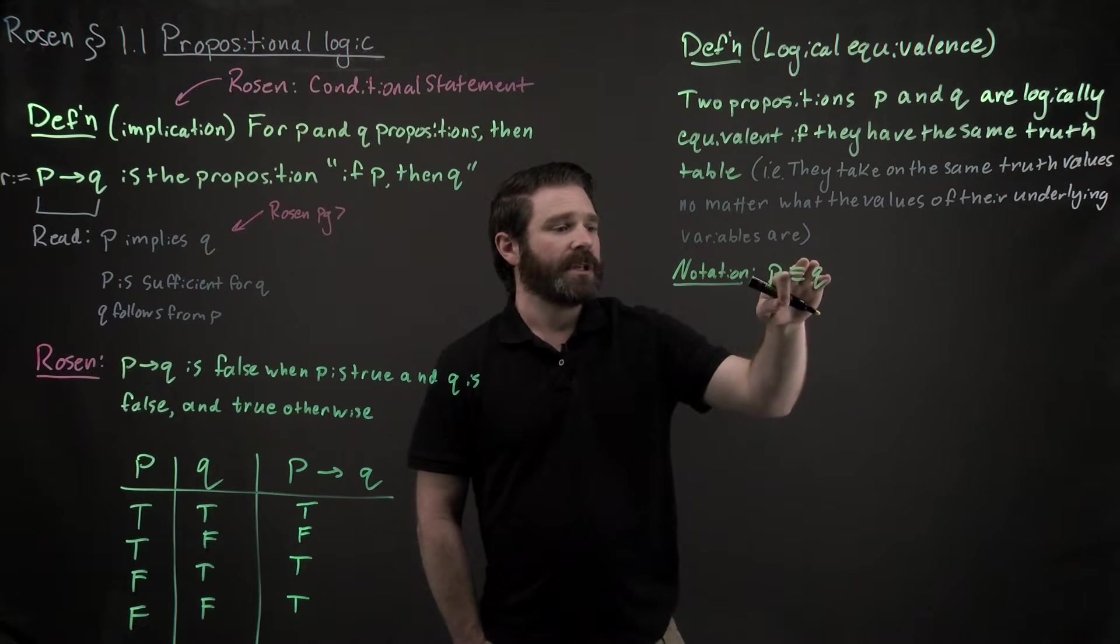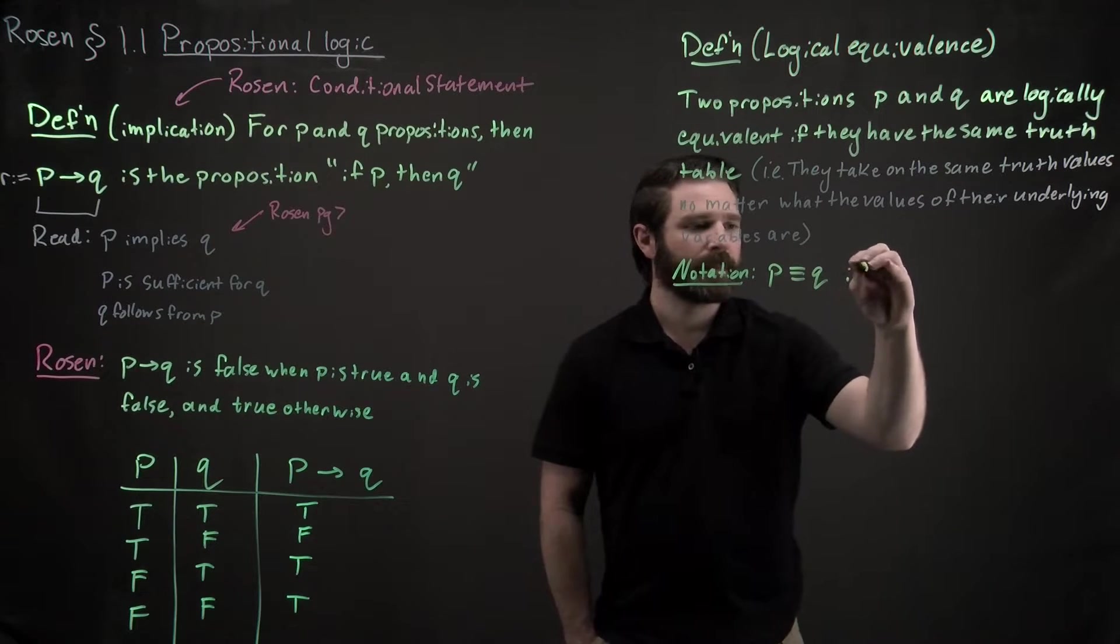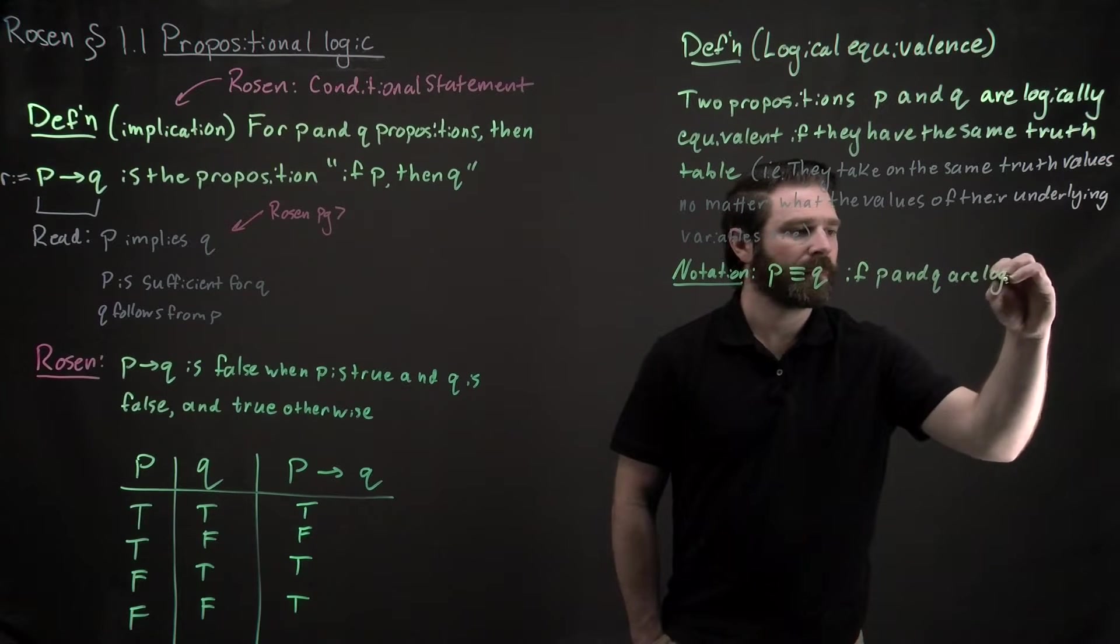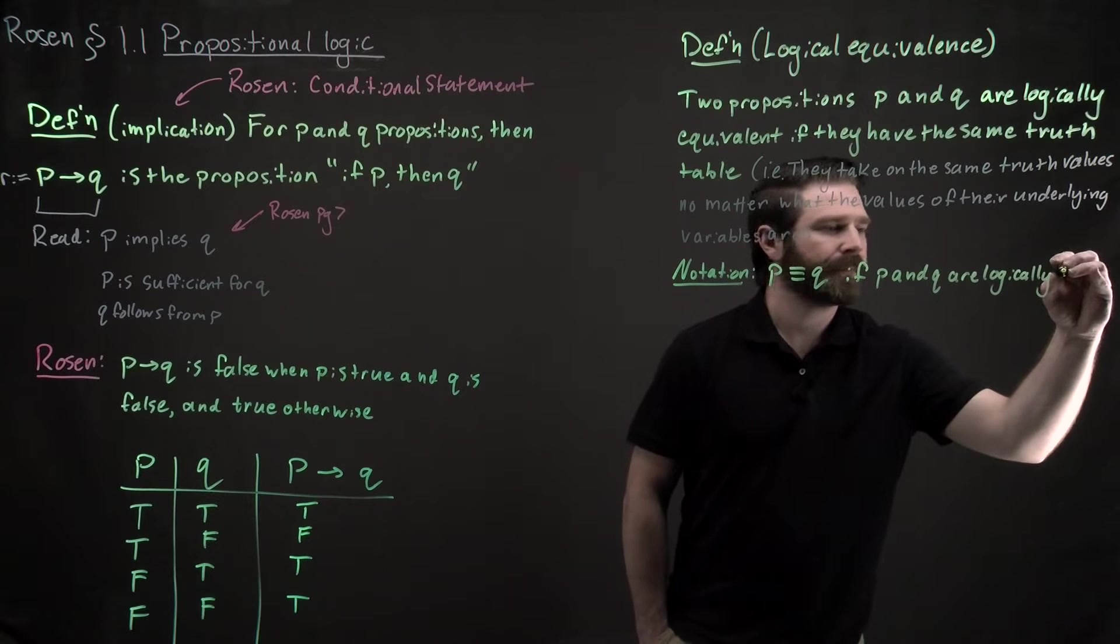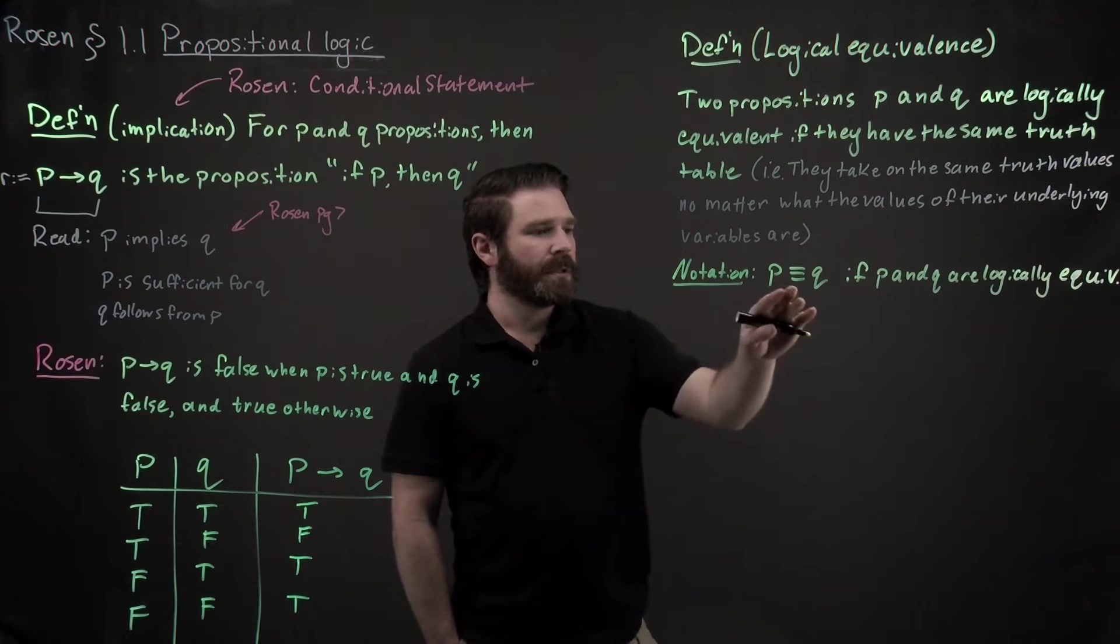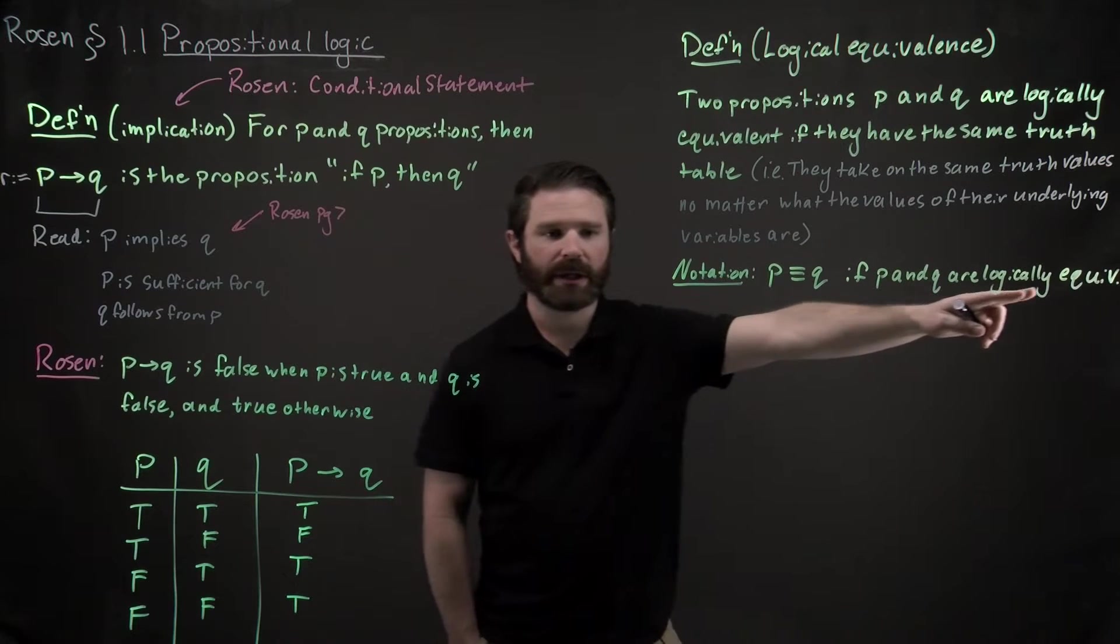This definition here is satisfied and we denote that with this little triple equal sign right here. So P triple equals Q if P and Q are logically equivalent.